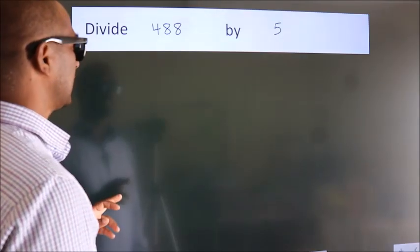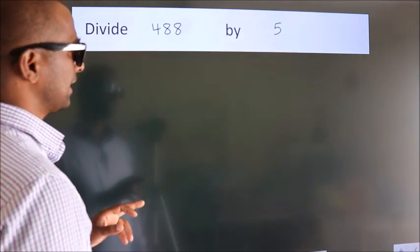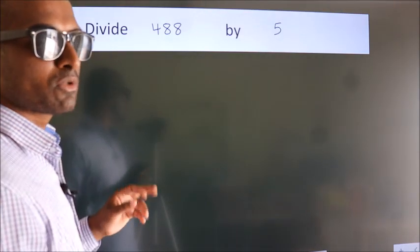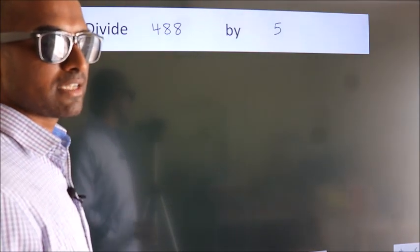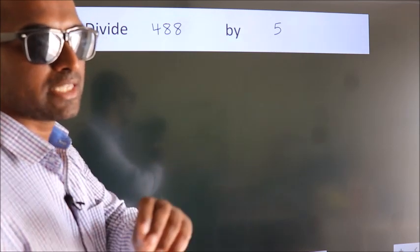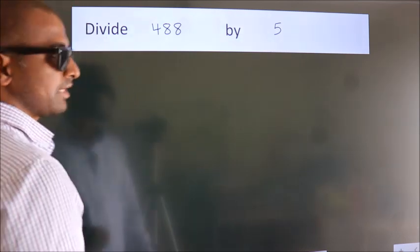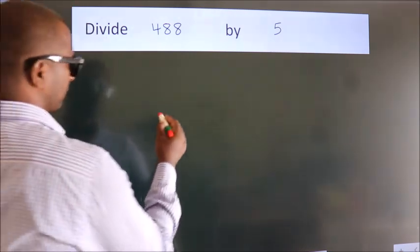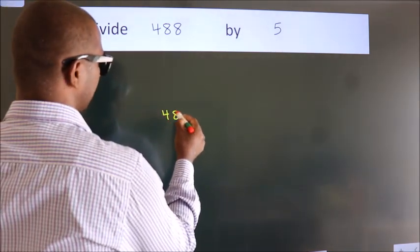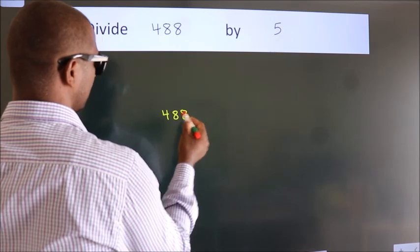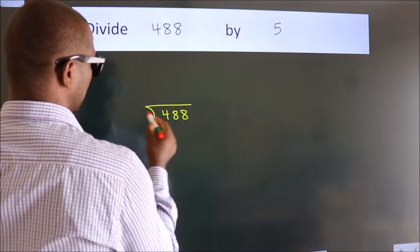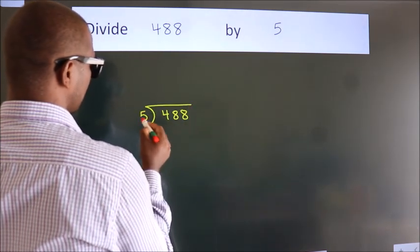Divide 488 by 5. To do this division, we should frame it in this way: 488 here, 5 here.